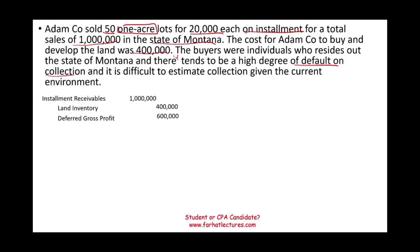A year later, in Year 1, we received $250,000 in cash. We debit cash and credit installment receivable. That's all — we cannot recognize any profit because the cash received has not yet recovered the cost of the land.